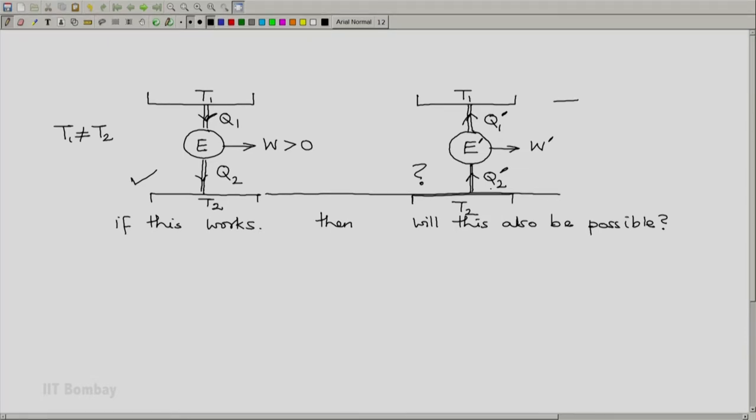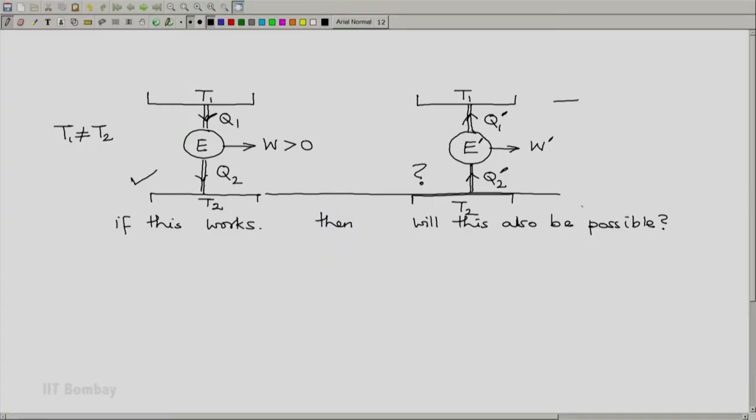Now what we do here is the following. We always check whether this combination will violate the Kelvin-Planck statement of the second law. That means can we set up a one T heat engine using this combination. If we can set up a one T heat engine, that means we are violating the Kelvin-Planck statement. And that means the second assumption which we made, that engine E is working as well as engine E prime is working. The second statement that the engine E prime is working will obviously be false. Let us see whether we can do that.